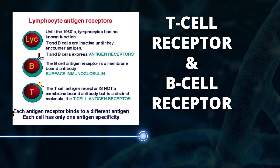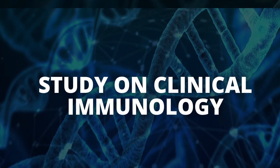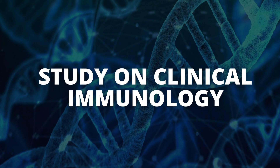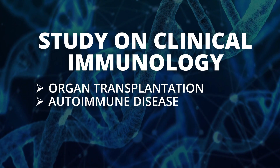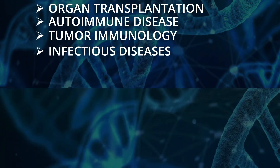MHC molecules are surface molecules present on nucleated cells. Until the 1960s, lymphocytes had no known function. T and B cells are inactive until they encounter antigen, at which point they express antigen receptors. The B cell antigen receptor is a membrane-bound antibody — a surface immunoglobulin. The T cell antigen receptor is not a membrane-bound antibody but a distinct molecule. Each antigen receptor binds to a different antigen, and each cell has only one antigen specificity. Studies also covered clinical immunology, including organ transplantation, autoimmune disease, tumor immunology, and infectious diseases.